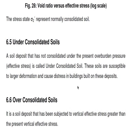An Under Consolidated Soil is one that has not consolidated even under the present overburden pressure. With the current pressure applied, it is still not getting consolidated. In such cases, the probability of settlement is very high, and we never recommend construction of any structure on under-consolidated soil.